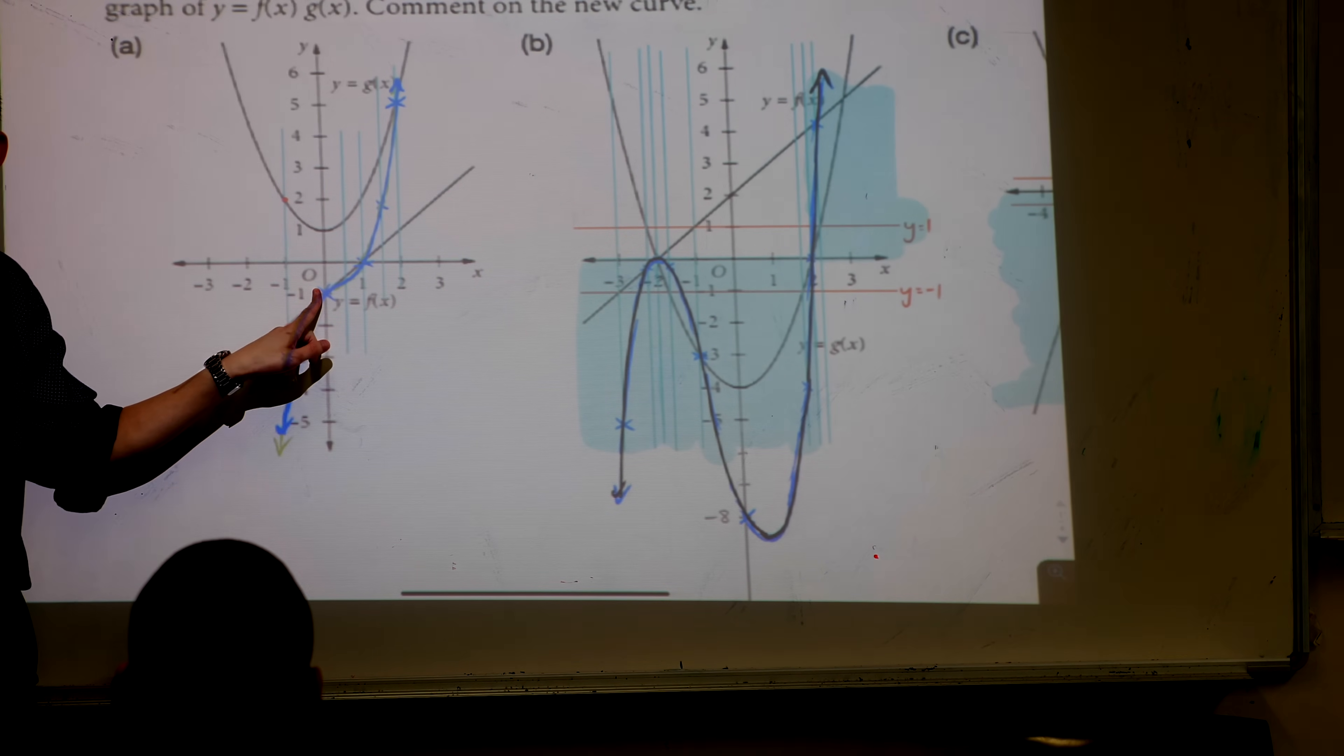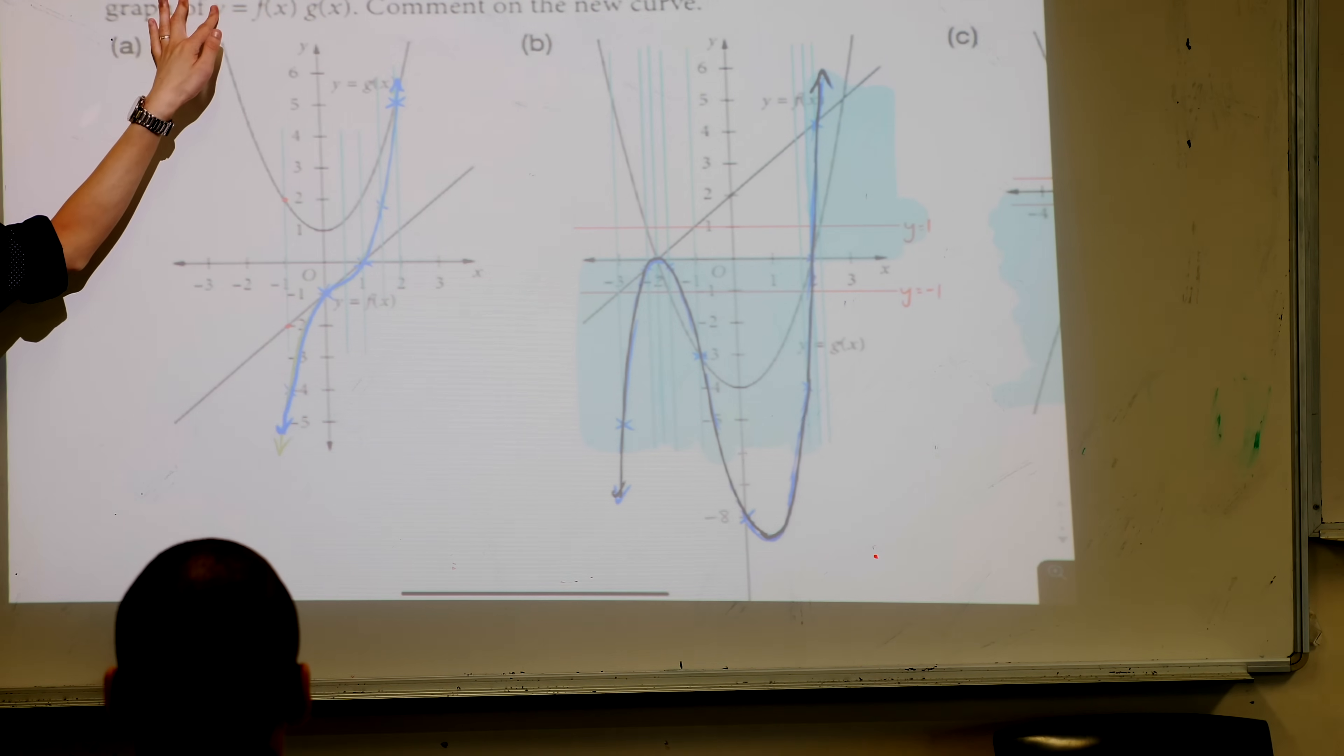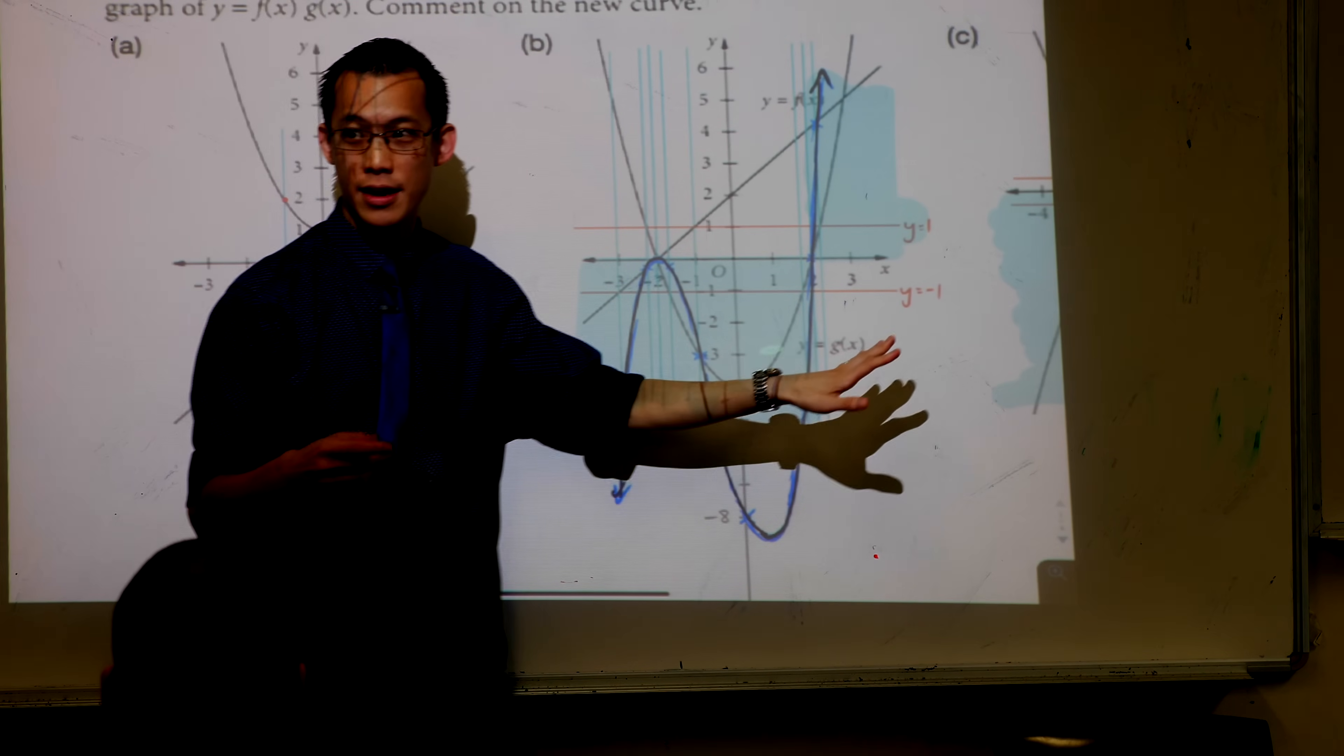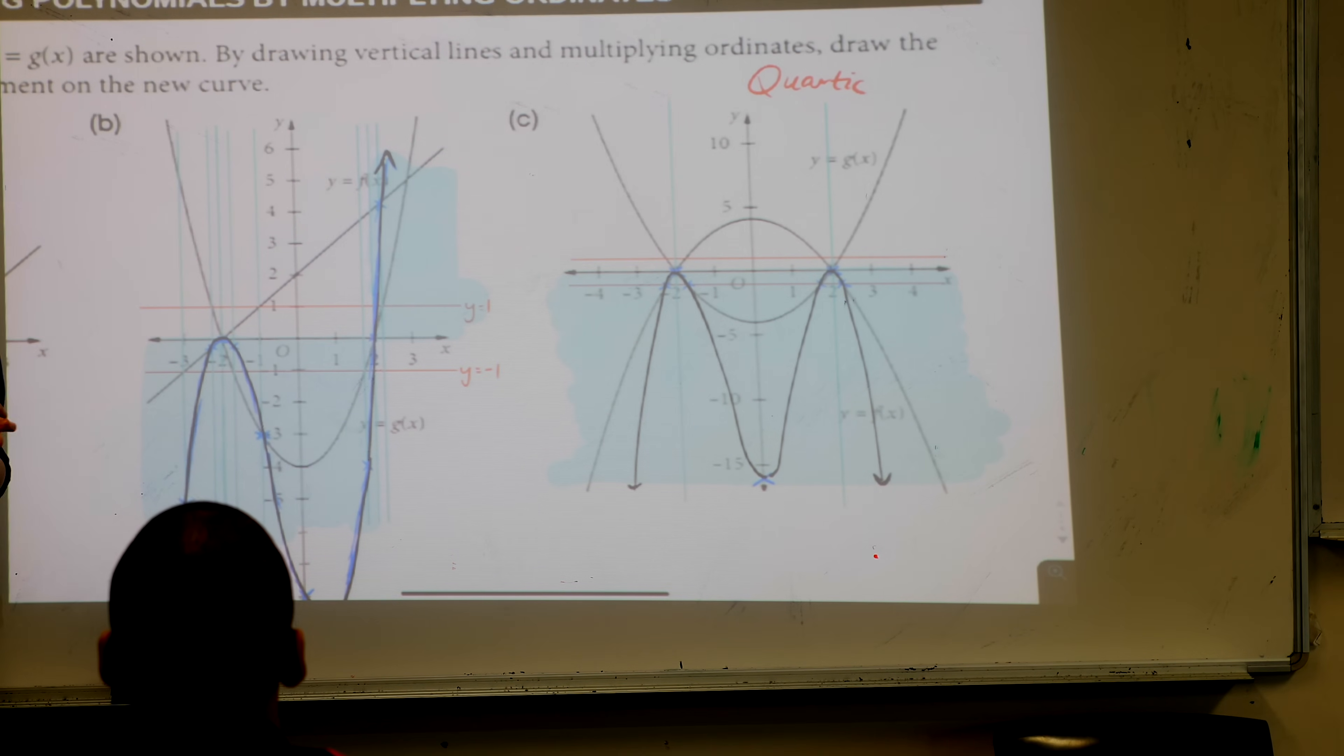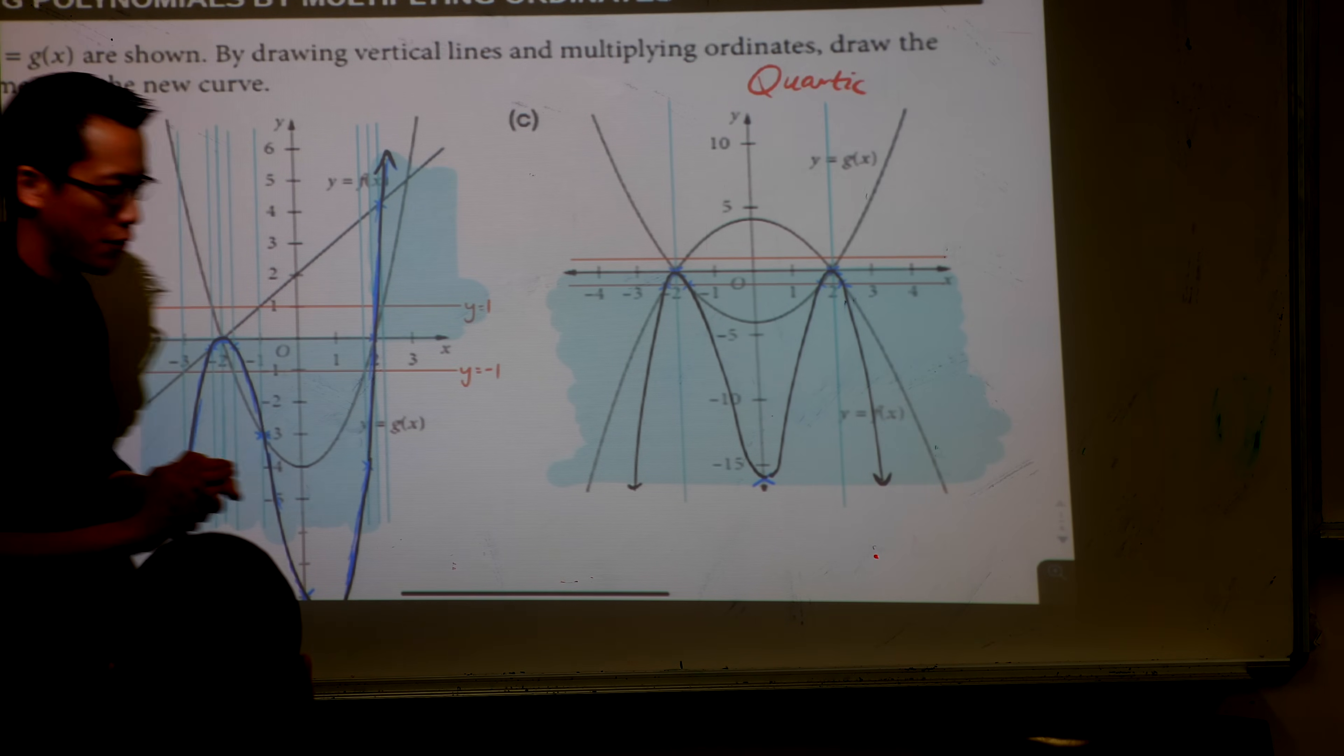Think about this, right? This is x to the power of one. It has no stationary points. This is x to the power of two. It has one stationary point. x to the power of three has two stationary points. And then lastly, x to the power of four has three, or it can have three anyway. That's interesting, isn't it? Just park that thought for now.